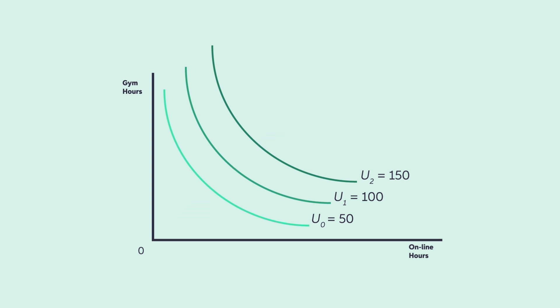Ultimately, this indifference map will be combined with a budget constraint map to reveal how consumers trying to maximize their utility will respond to changes of affordable combinations of goods. If you're still having trouble with indifference curves, come on over to Chegg to see examples that we've already worked through, and you'll see solutions that we provided, or you can speak directly with a Chegg subject matter expert.